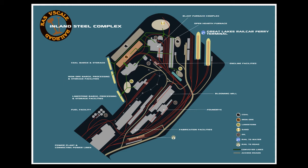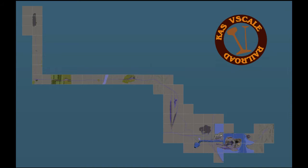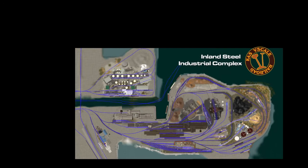The first thing I did was to make a conceptual rendering of how I could take the prototype and scale it back to a fun layout size. I could also think about what industries I wanted to use and how they could work together. Here's the bird's eye view of the entire layout. The Inland Steel Industrial Complex appears on the lower right-hand side of the layout.